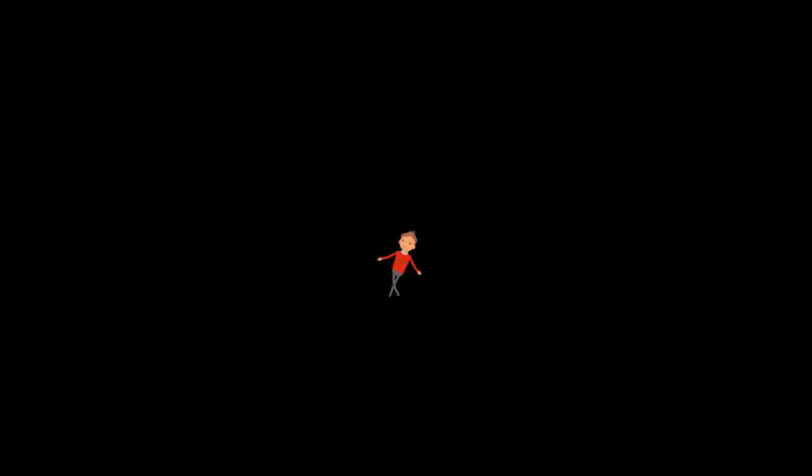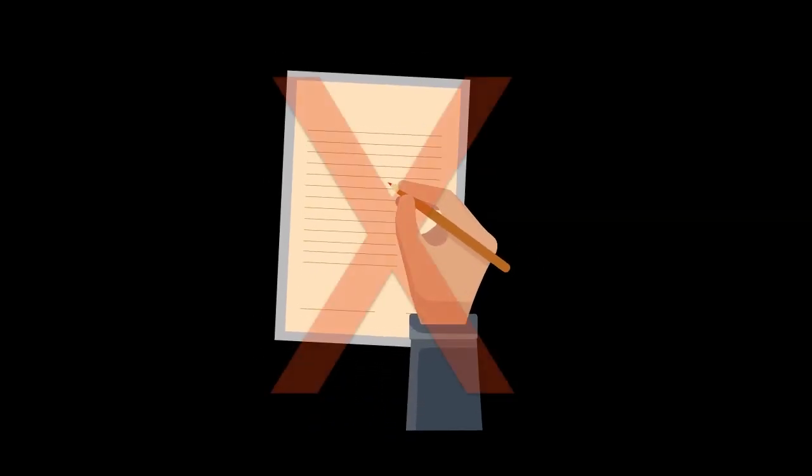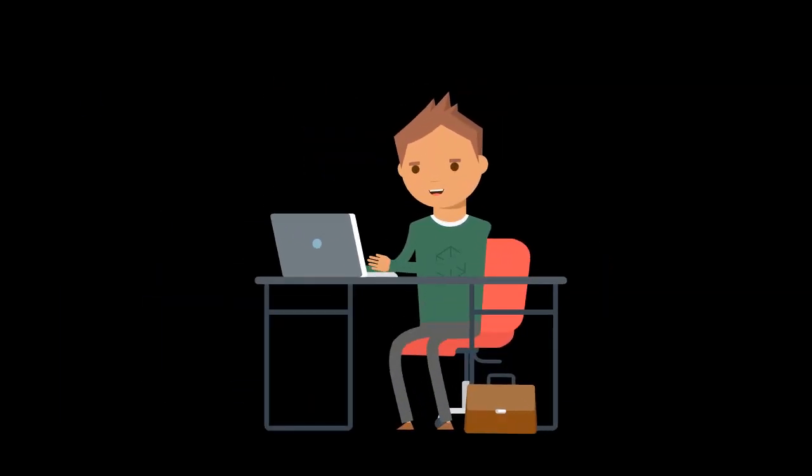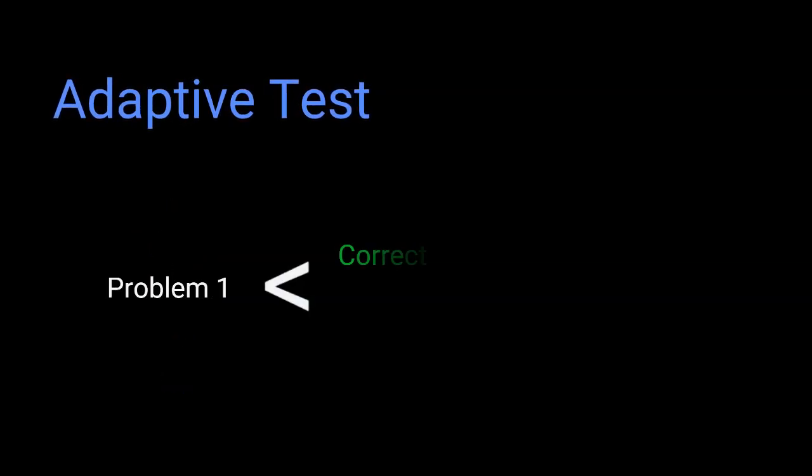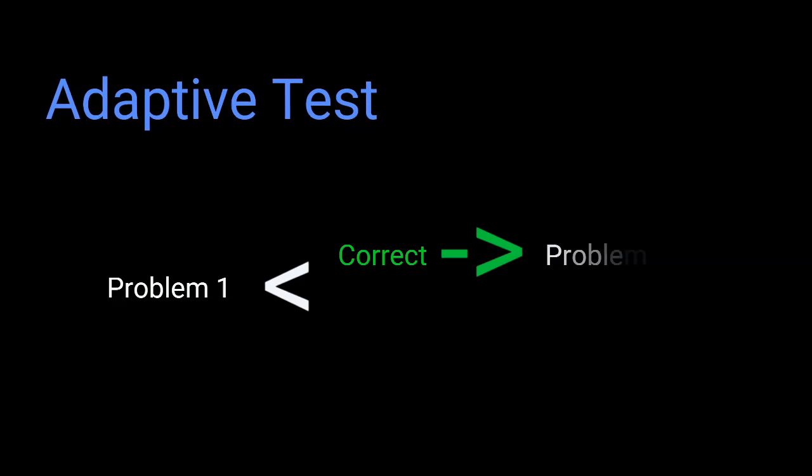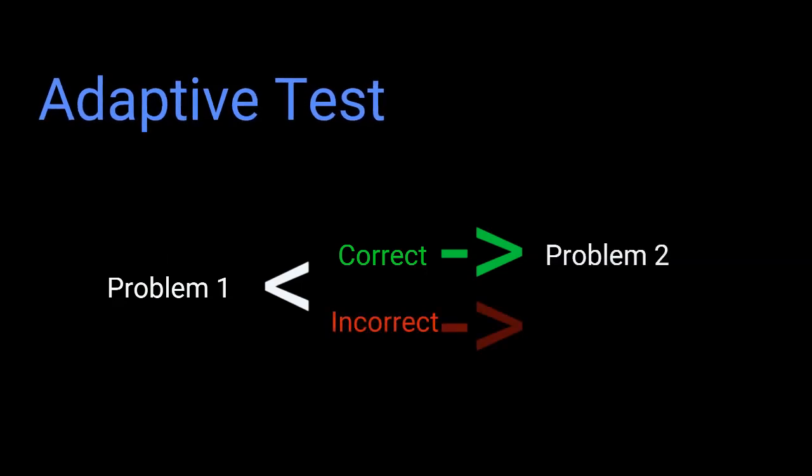The other big difference is that the new test will no longer be paper-based. It will be a digital adaptive test, which means that each subsequent problem a student sees will depend on whether the student got the previous problem correct or incorrect. Other standardized tests have been using this format for years, but the SAT is now coming on board with this.